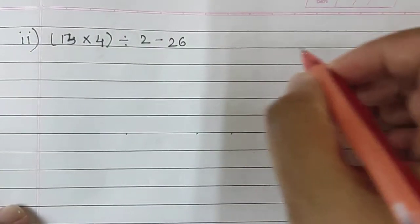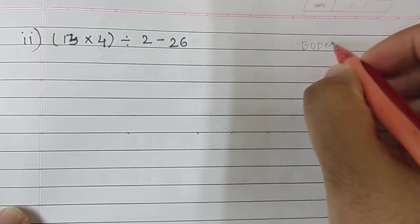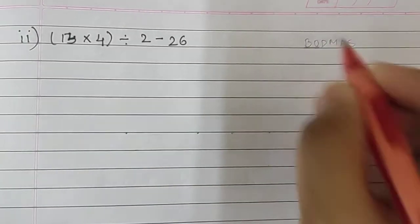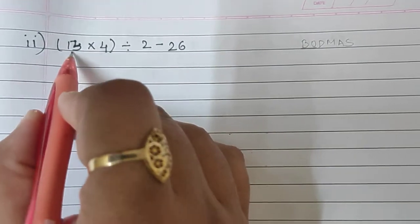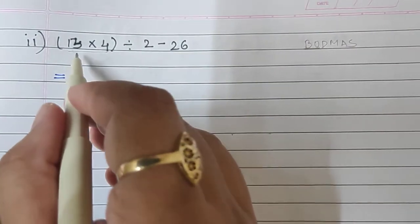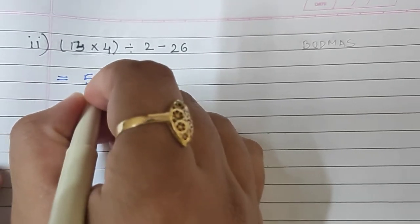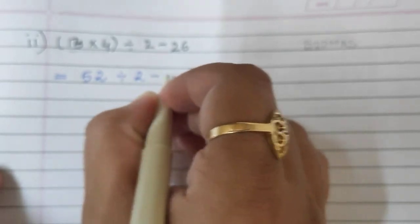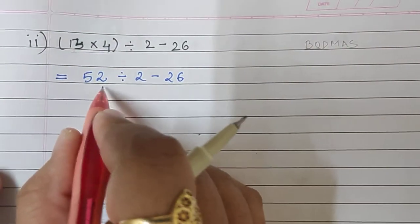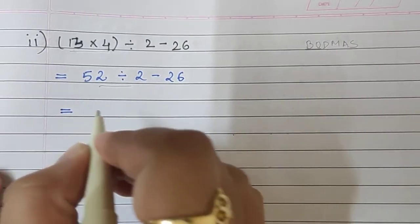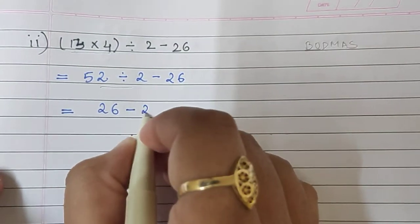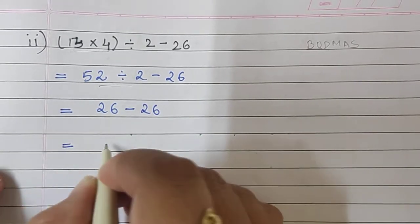Moving to question number 2. Again, let's write down BODMAS in rough so that it helps us do the sum. The first is Bracket Of — there is already a bracket here, so first we will solve the bracket. 13 into 4 is 52, and we copy down the rest. After Bracket Of, the next is Division — 52 divided by 2 is 26. Copy down the rest.